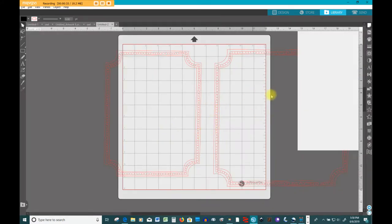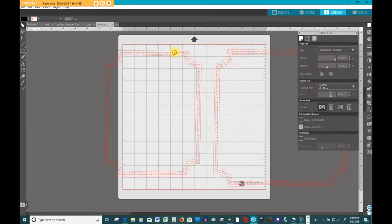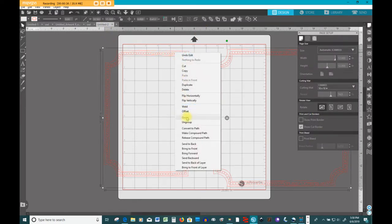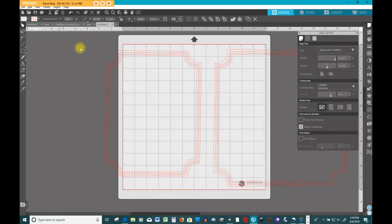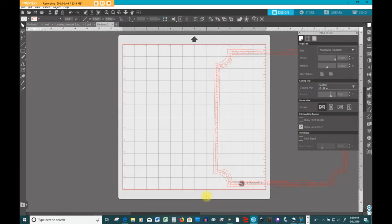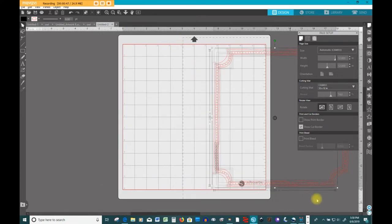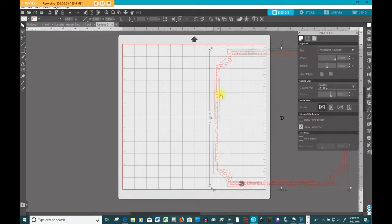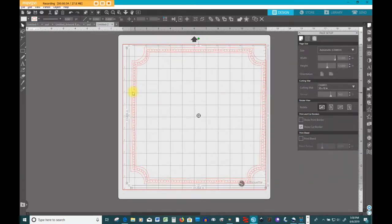So this design came with two borders on it. I only want one, so I'm going to right-click and release a compound path, then go in, delete the one I don't want, select all of the other one, right-click it, and make it a compound path again.